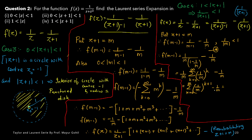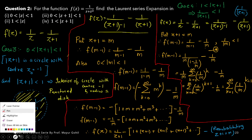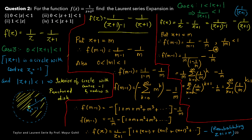Now if you expand for a few terms: when k equals 0 we get 1/m, and there is minus 1/m — so these cancel. Therefore the summation will run from k equal to 1 to infinity: summation of (1/m)^(k+1), k from 1 to infinity. Now we do the resubstitution — put m equal to z+1.